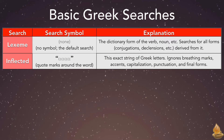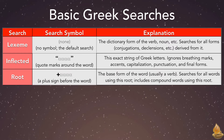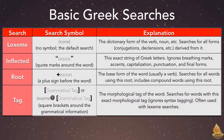The Inflected search, which is indicated by quote marks around the word, searches for this exact string of Greek letters. It ignores breathing marks, accents, capitalization, punctuation, and final forms. The Root search is indicated by a plus sign before the word. It looks for the base form of the word, usually a verb, and it searches for all words using this root, including compound words which use this root. The grammatical tag search is indicated by square brackets around the grammatical tag. It looks for the morphological tag of the word and searches for words with this exact morphological tag. It ignores syntax tagging.